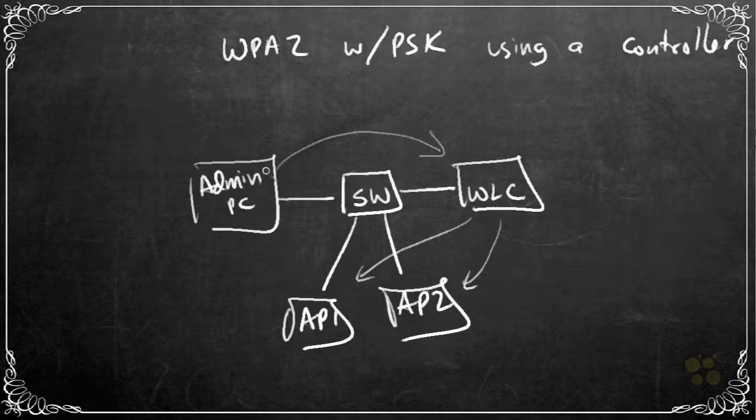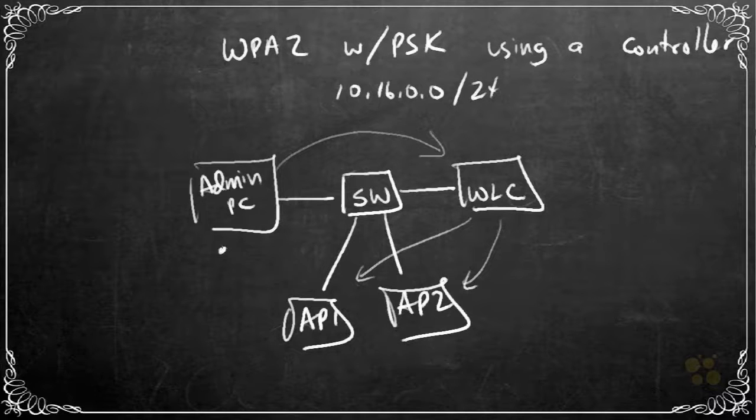Now to make this network all function, we're going to need some IP addresses. So let's do this. This is the 10.16.0.0 network and let's use a 24-bit mask. And for the admin PC, let's put him at .10 and for the wireless LAN controller, let's put him at .2.